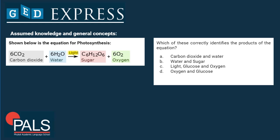On the left side we see the equation for photosynthesis. We have carbon dioxide plus water, and some light here on top of the arrow, gives us sugar and oxygen — or 6CO₂ plus 6H₂O gives us C₆H₁₂O₆ plus 6O₂. The question asks which of these correctly identifies the products of the equation: carbon dioxide and water, carbon dioxide and sugar, light, glucose and oxygen, or glucose. The first thing we have to know — assumed knowledge — is that C₆H₁₂O₆ is glucose, and that sugar is glucose. So sugar is the same as glucose.